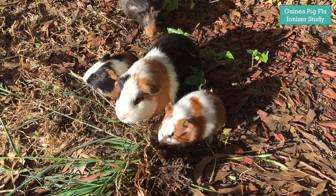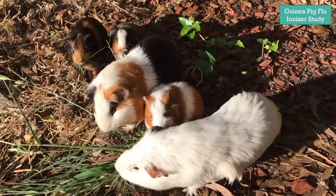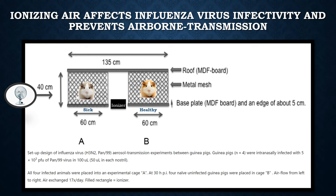A guinea pig flu ionizer study should absolutely intrigue you. The study is titled 'Ionizing air affects influenza virus infectivity and prevents airborne transmission.' Guinea pigs that had the flu were placed next to healthy guinea pigs with an ionizer in between. The healthy guinea pig did not get sick while the ionizer was on, but when they turned off the ionizer, the healthy guinea pig got sick. This is real-world data of an ionizer preventing airborne viral illness.